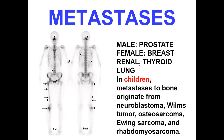Bronchogenic carcinoma — lung carcinoma — such as squamous cell carcinoma or small cell carcinoma, may also go to the bones. So metastasis to the bones commonly arises from prostate in males, breast in females, then renal cell carcinoma, thyroid carcinomas, and lung carcinoma. In children, metastasis to the bones originates from childhood malignant tumors like neuroblastoma, Wilms tumor of the kidneys, Ewing sarcoma, osteosarcoma, and rhabdomyosarcoma. So childhood sarcomas or blastomas go to the bones.